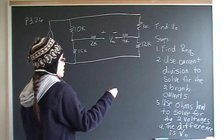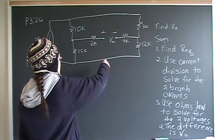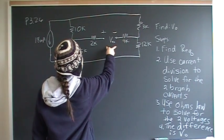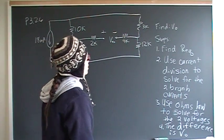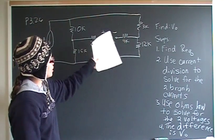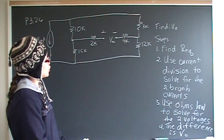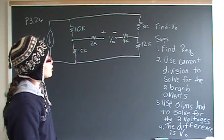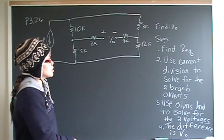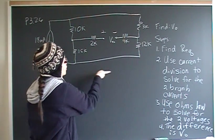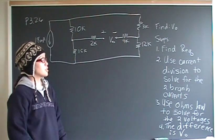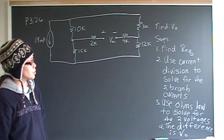So what we want to do is stick one end of the voltmeter here, one end of the voltmeter here, and find out what the voltage difference is. The steps in solving this problem: first, find the equivalent resistance of this circuit. After you find the equivalent resistance, you will use current division — you see the current goes here and it splits — so you will use current division to find the two branch currents of this circuit.